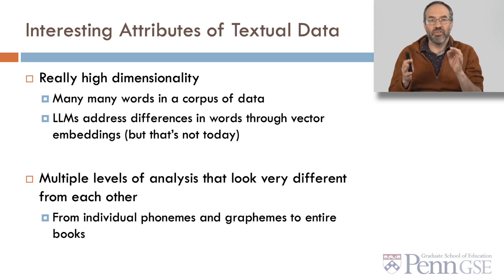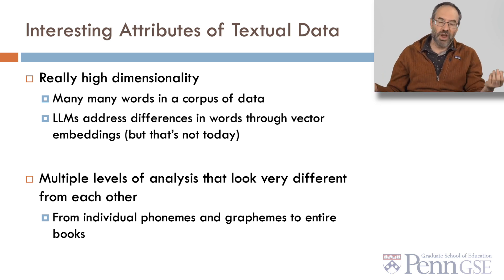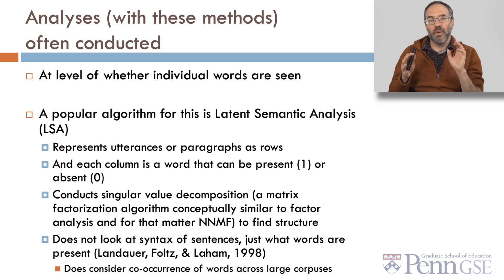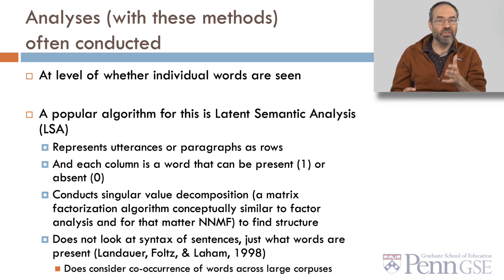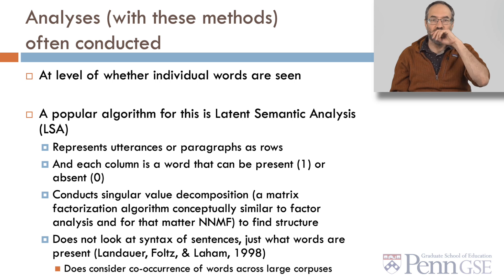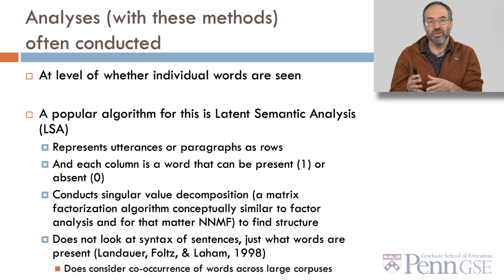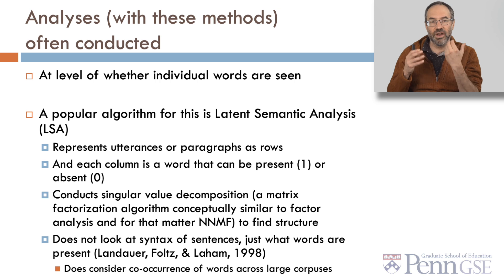There are also multiple levels of analysis that look very different from each other, from looking at individual phonemes and graphemes to looking at entire books. Analyses with these methods are often conducted at the level of whether individual words are seen. A popular algorithm for this historically was latent semantic analysis, also called LSA. LSA represents utterances or paragraphs in rows and each column is a word that can be present (one) or absent (zero). It then conducts singular value decomposition, a matrix factorization algorithm conceptually similar to factor analysis and non-negative matrix factorization, to find structure.